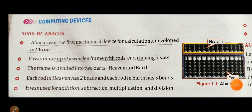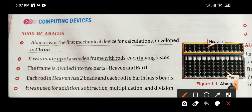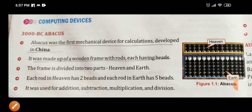Now let us look at computing devices. In 3000 BC, the abacus was invented — 3000 years ago. Abacus was the first mechanical device for calculation, developed in China. It was a calculating device made up of a wooden frame with rods having beads, as you can see in the picture.